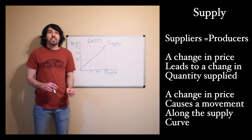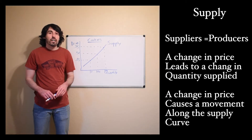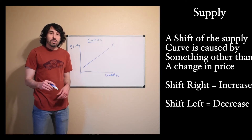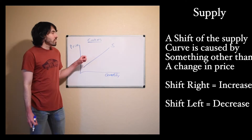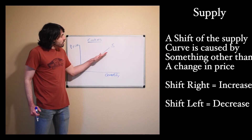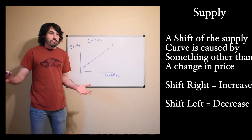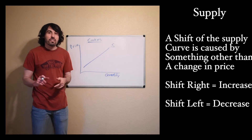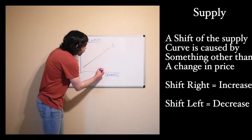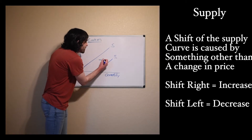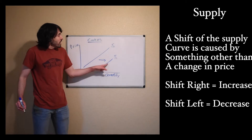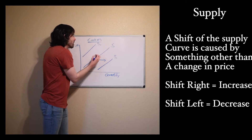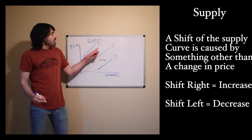Now we're going to talk about things outside of price that cause a change in the supply of something. Just like with demand, something other than price that causes the supply of a product to change is going to cause a shift of the curve. An increase of supply is going to be a shift to the right. Remember in this class, every time something shifts to the right, that's an increase. Every time something shifts to the left, that's a decrease. Something you might notice: a shift to the right causes the supply to increase, even though the supply curve is now lower than the old one. A shift to the left would cause the supply to decrease.